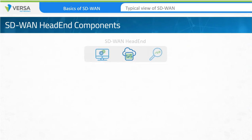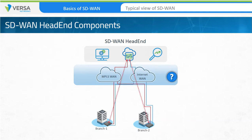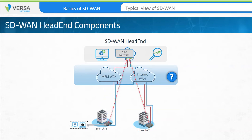The control component is responsible for establishing the control plane. In the example, if a new network is connected to branch one, the branch one device informs the controller of the new network segment, and the controller provides information about the network segment to other devices in the WAN that need to know about that new network.